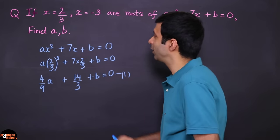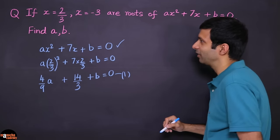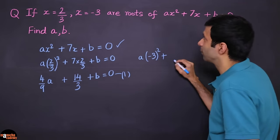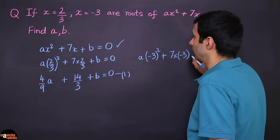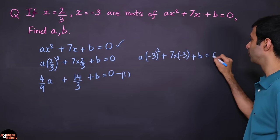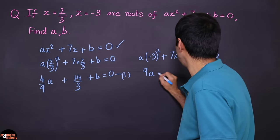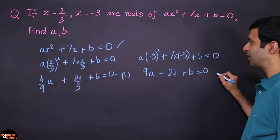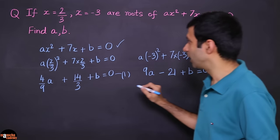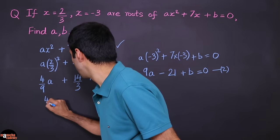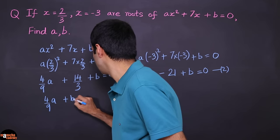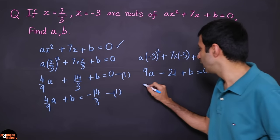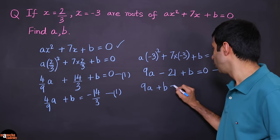Now substituting x = -3: A(-3)² + 7(-3) + B = 0, giving 9A - 21 + B = 0. That's our second equation. Rearranging: (4/9)A + B = -14/3 and 9A + B = 21. We now have two linear equations in two variables A and B.